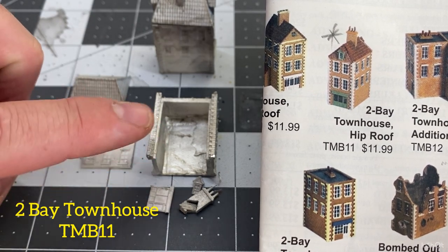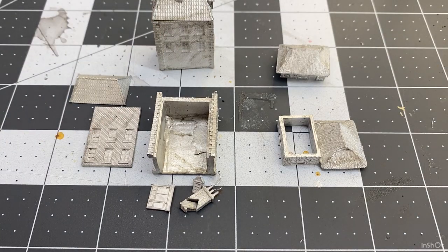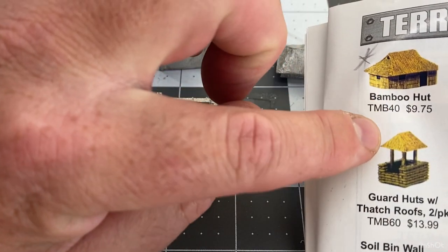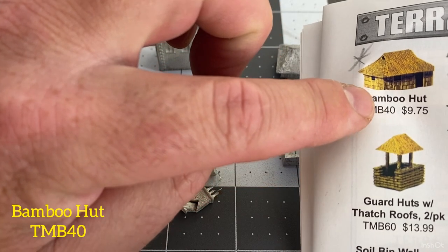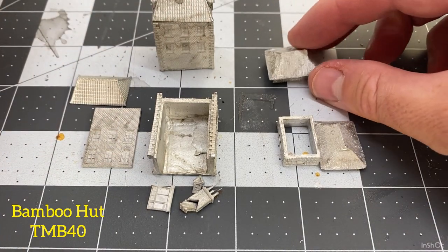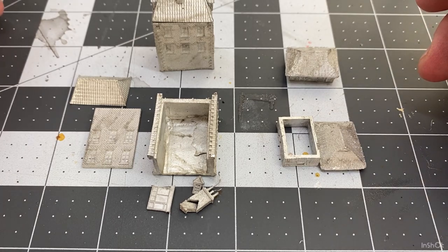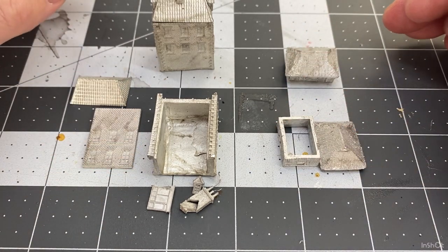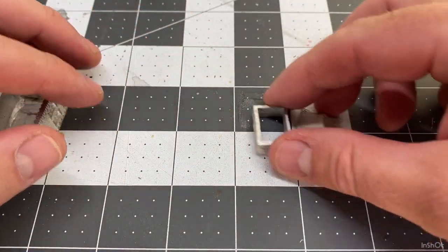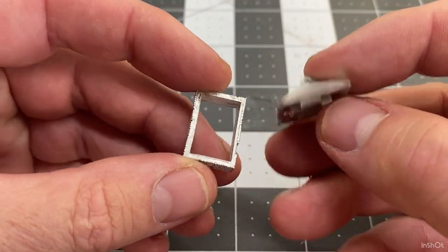It's disassembled here, and then this one in the background is the building assembled. Then the other one we're looking at here is the small bamboo hut. So it's just here, bamboo hut TMB40 in the GHQ microarmor catalogue. That's a small hut there, so one in the back is assembled and we'll just go through how I clean them up and prepare them for gluing and then for priming.